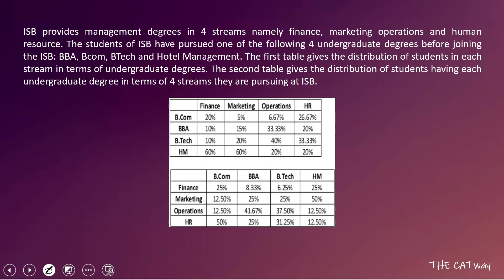ISB provides management degrees in four streams: Finance, Marketing, Operations, and Human Resource. The students of ISB have pursued one of the following four undergraduate degrees before joining ISB: BBA, BCom, BTech, and Hotel Management. The first table gives the distribution of students in each stream in terms of undergraduate degrees — in Finance, 20% from BCom, 10% from BBA, 10% from BTech, and 60% from Hotel Management. Similarly for Marketing: 5% BCom, 15% BBA, 20% BTech, and 60% Hotel Management.